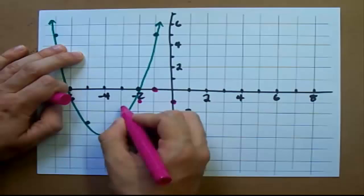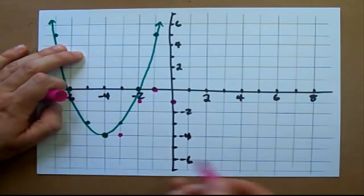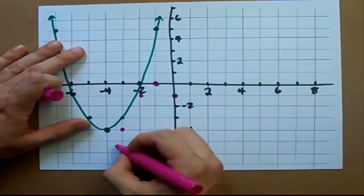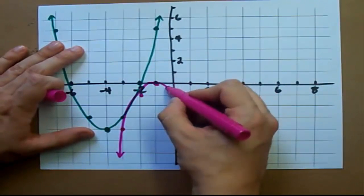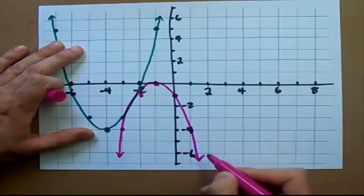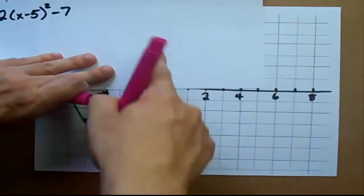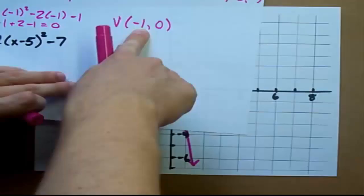Over 1, down 1. Over 1, down 3. And keep going as much as you can. Then draw a line through them, or draw a curve I guess I should say, through those points. And you have your parabola with the vertex at negative 1, 0.